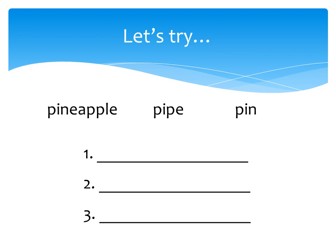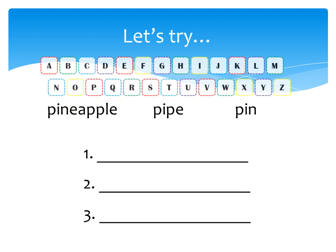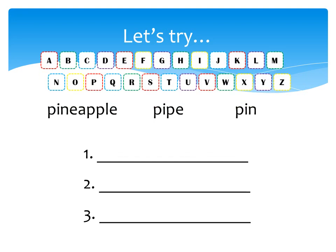For pineapple, it is P-I-N. For pipe, it is P-I-P. And for pin, it is P-I-N. Let's see. The letter P and the letter N. Which one comes first? Let's check the alphabet. The letter N comes before the letter P, so I know the word pipe is the last one that I would find.